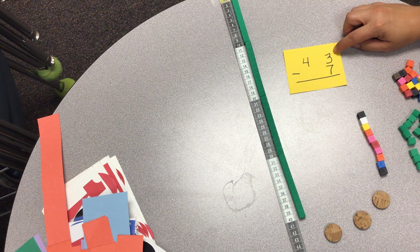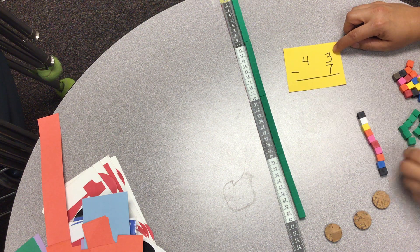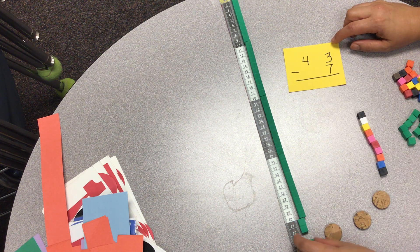So we need 43, 4 tens and 3 ones: 1, 2, 3 ones.